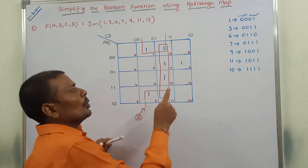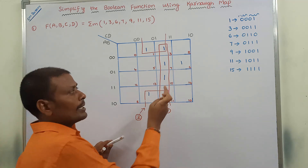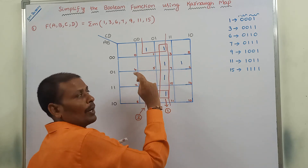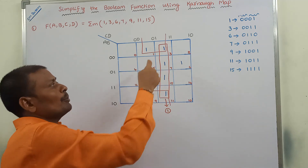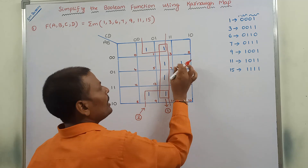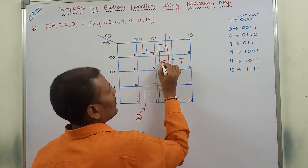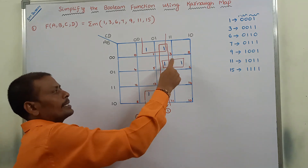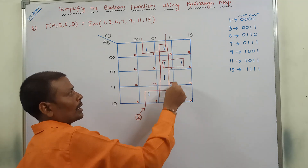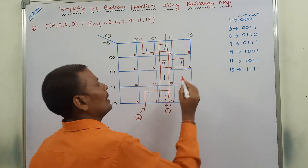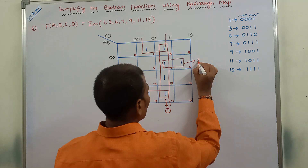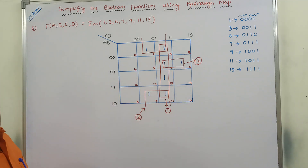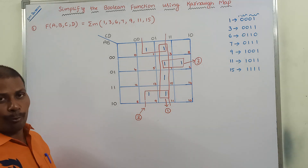Next, only this one remains. Its adjacent one is already consumed in the quad, but we still pair them. So this one and that one form one pair. Overall, we get 2 quads and 1 pair after grouping the 7 ones.